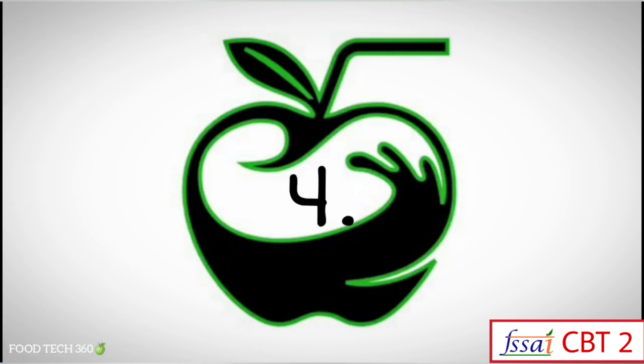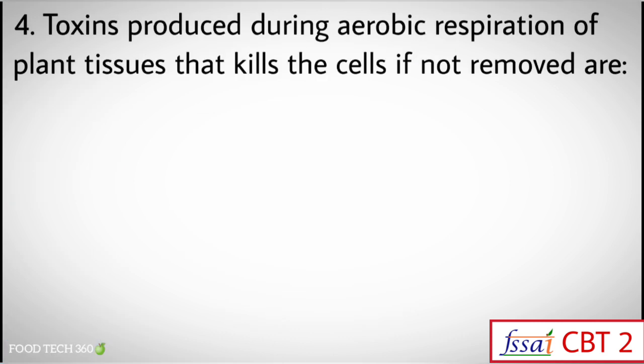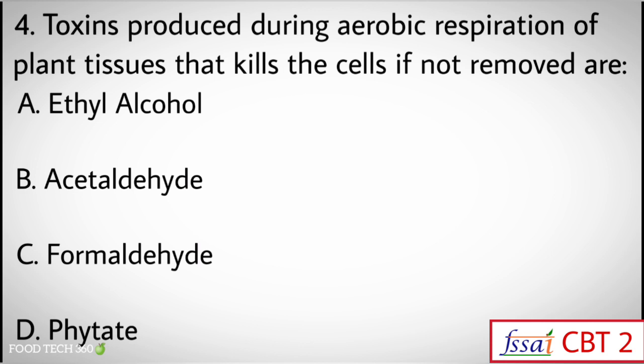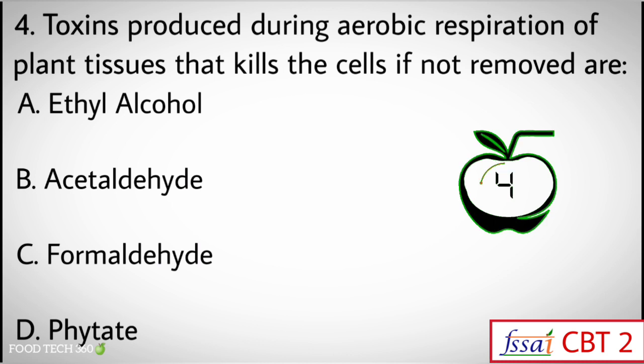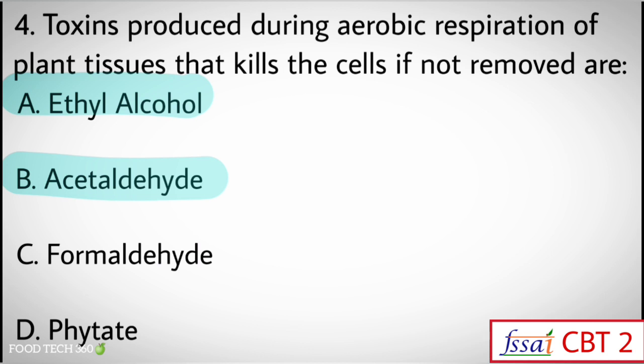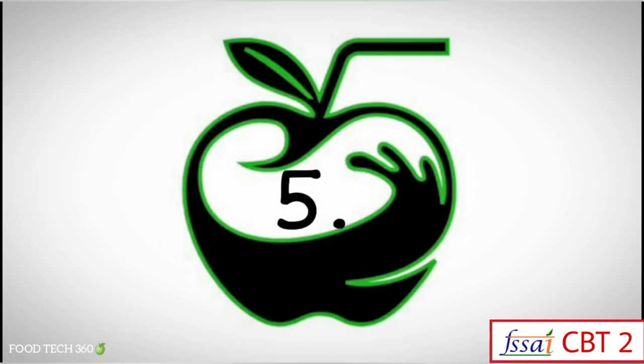Question number 4: Toxins produced during aerobic respiration of plant tissues that kill the cells if not removed are — Options: A) Ethyl Alcohol, B) Acetaldehyde, C) Formaldehyde, D) Phytate. Correct answers: A) Ethyl Alcohol and B) Acetaldehyde.